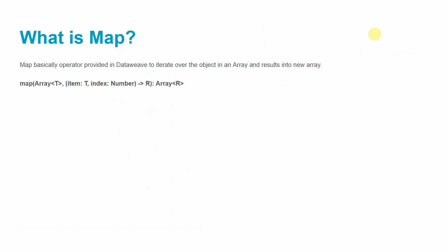So let's start with map. The map operator in DataWeave is used to iterate over objects in an array and results in a new array. Basically the map operator iterates over elements or objects in an array and produces a new array as output. So the output of the map operator will always be an array. Using map you can access both the index and the value.